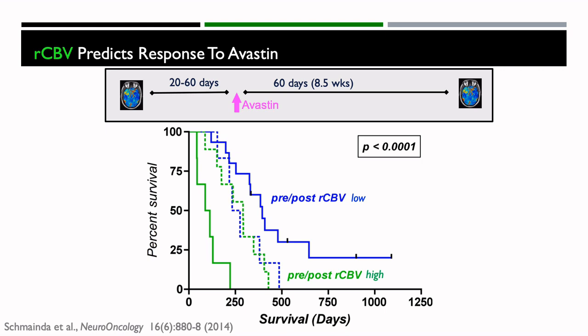We also do quantitative evaluation of RCBV to predict response to Avastin. We collected RCBV 20 to 60 days before starting bevacizumab and again 60 days after, and looked at the change in RCBV to see if it predicted patient response. If both pre- and post-Avastin RCBV are low, you have the best overall survival outcomes. If they're both high — suggesting bevacizumab isn't having much impact — it's the worst overall survival. RCBV can help predict response to bevacizumab and help physicians determine if it's the right drug.